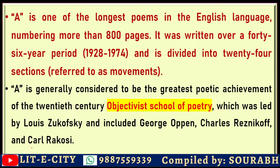The poem is divided into 24 sections; each section is referred to as a movement. It is considered to be the greatest poetic achievement of the 20th century. The objectivist school of poetry includes poets such as Louis Zukofsky, George Oppen, Charles Reznikoff, and Carl Rakosi.